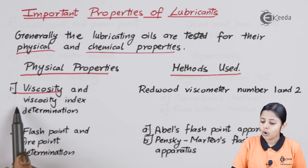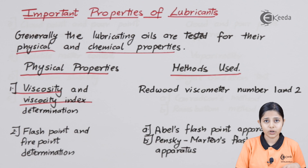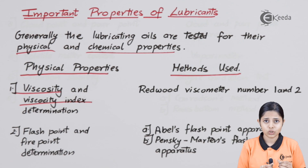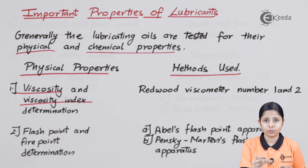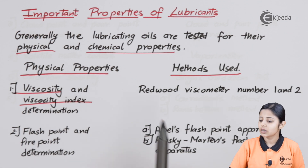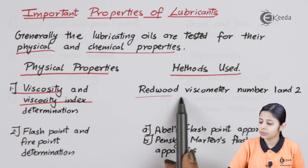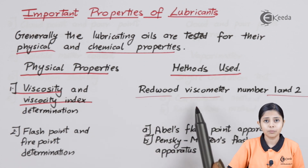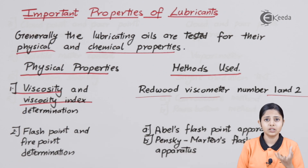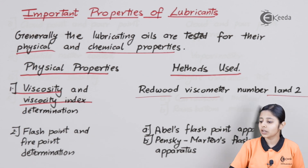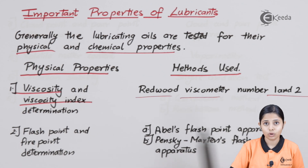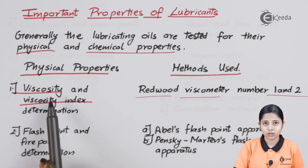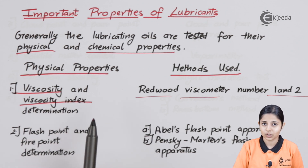The first physical property is viscosity or viscosity index determination. We should see how viscous the oil or lubricant we are going to use is. The viscosity is measured and given as a viscosity number, and according to that number we can use that particular oil in the machinery. It is determined using Redwood Viscometer Number 1 and Number 2 — two tools that measure the viscosity of the oil — and from that we find the viscosity index.